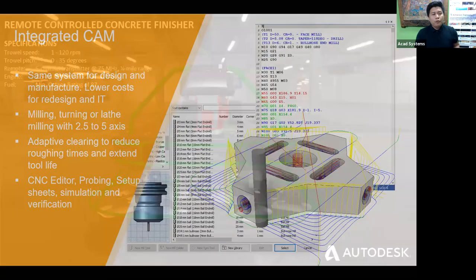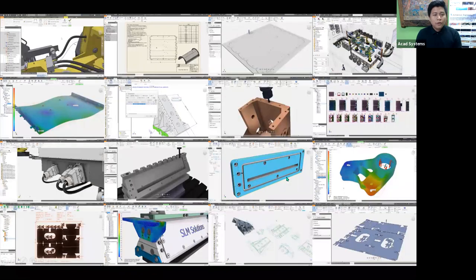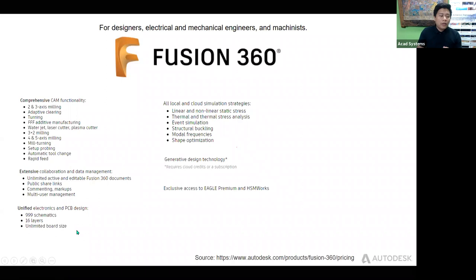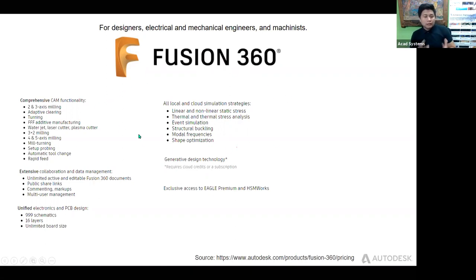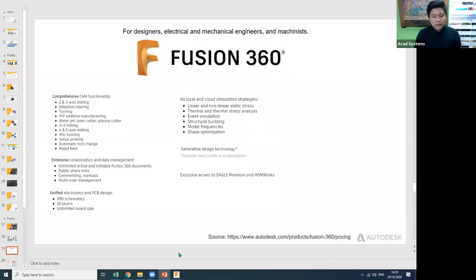When you purchase Fusion 360, it includes several tools: 3D modeling, CAM, PCB design — for example if you want to make a motherboard — simulation, and generative design. We covered generative design in a session a few weeks ago; you can check our Facebook page to view that recording.